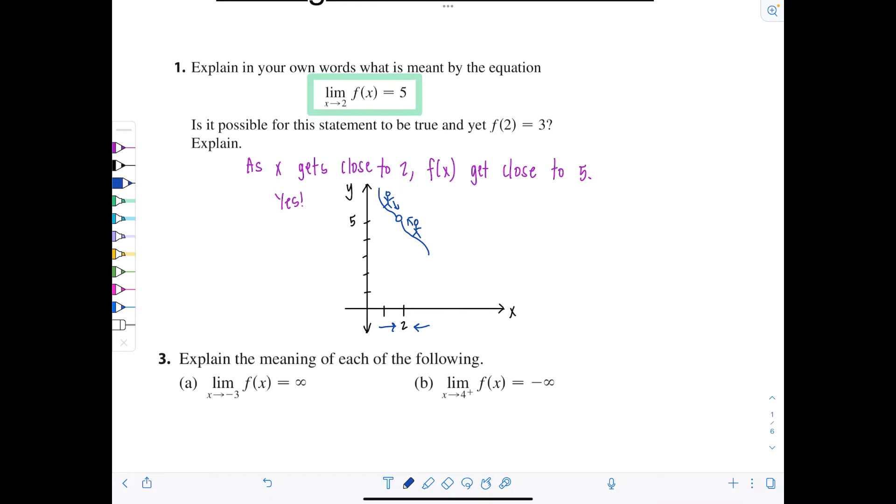Yet, they want f of 2 to equal 3. So what would happen is you'd have a hole, and then you would have the function value filled in right there, f of 2 is 3. So yes, it's possible if you have a hole in your graph at 2, 5, where the limit is, but f of x is defined such that f of 2 equals 3. So that's how that would be possible. Good.